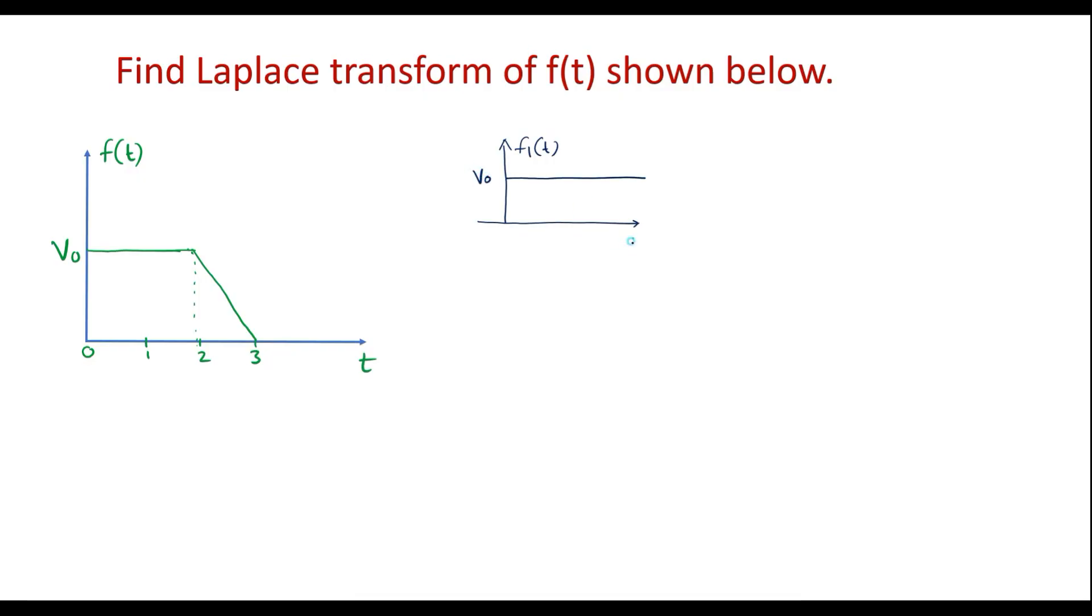This is v0, that is the magnitude. So I can represent f1 of t is equal to v0 u of t. Say this is 0, 1, 2.